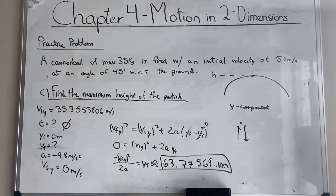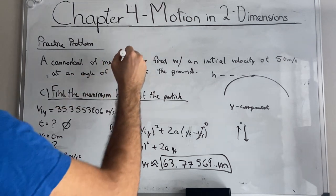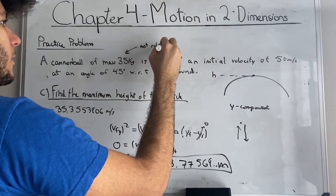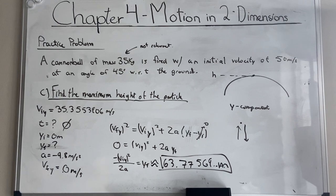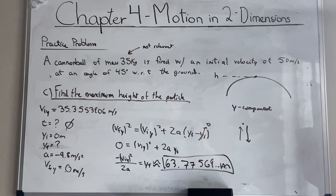Great job, guys. You just found the maximum height that a particle can reach just by knowing the angle at which it's fired and its initial velocity. Note that the mass was not relevant in this situation — not at all. We did not need to care about mass, since we're working only with kinematics. Thank you so much for watching, and I will see you guys in the next video, where we will be discussing rotated coordinate systems, uniform circular motion, as well as non-uniform circular motion. See you guys then, bye-bye.